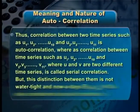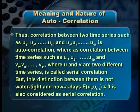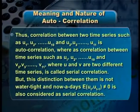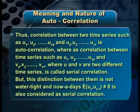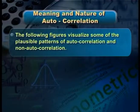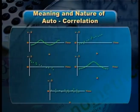For instance, u1, u2, u10 and u2, u3, u11 is autocorrelation. Whereas correlation between time series such as u1, u2, u10 and v2, v3, v11, where u and v are two different time series, is called serial correlation.